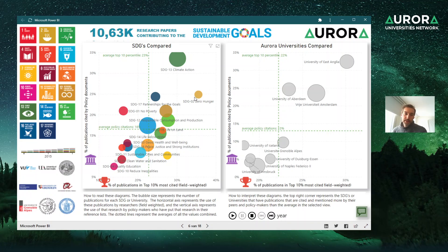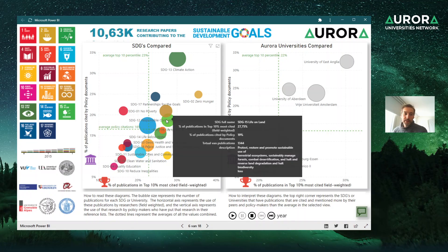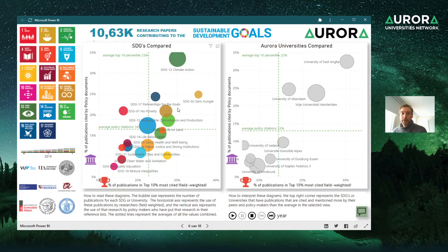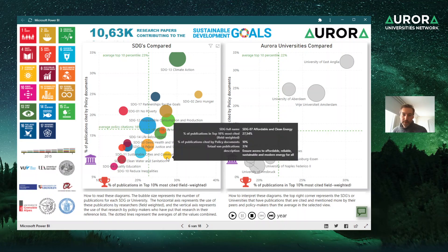For example, the top-right quadrant shows excellent research that is above average for both top 10% citations and policy citations. You could also see that Affordable and Clean Energy is an SDG delivering excellent research but not mentioned much in policy documents — that's an SDG you could look into to see how to promote this research to policy makers more.